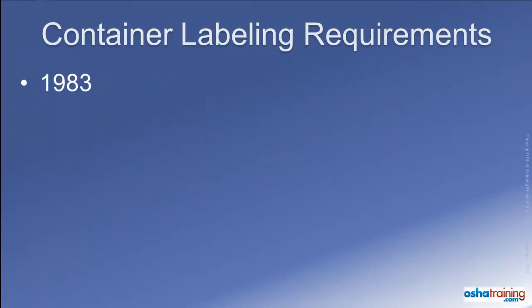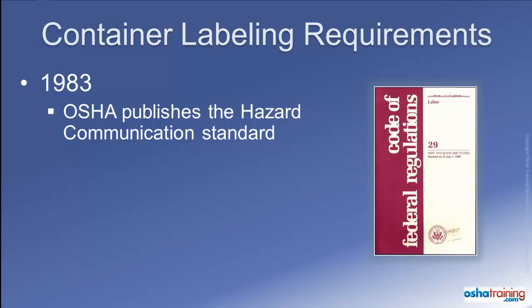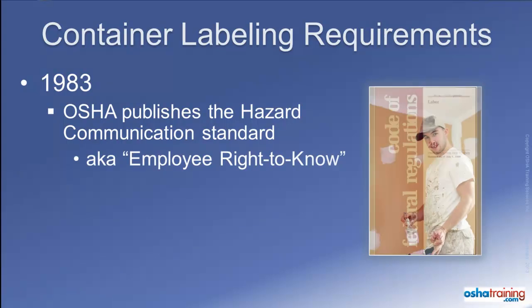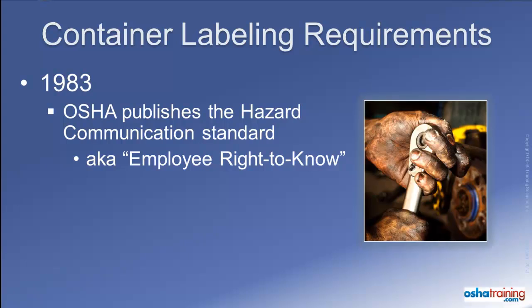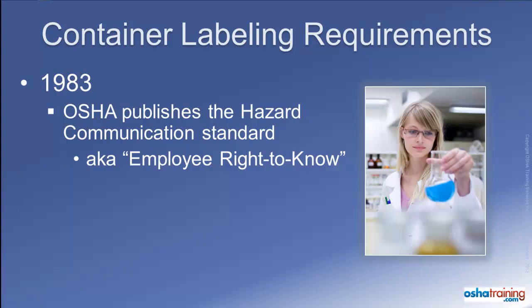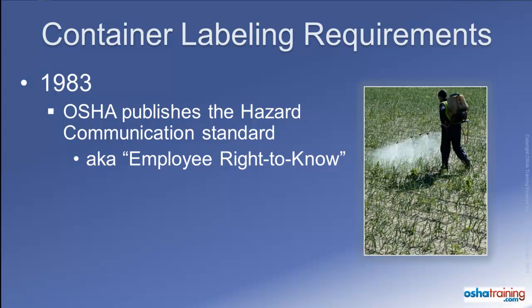In 1983, the Occupational Safety and Health Administration, or OSHA, published the Hazard Communications Standard. This was one of the first major new standards since the original OSHA rules were published in 1971, and was often referred to as the Employee Right to Know Standard. It was developed to help ensure workers had access to information and training about the hazards of the chemicals and products they were exposed to at work.